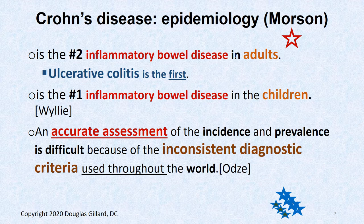Crohn's disease is the number two most common inflammatory bowel disease. In adults, you're more likely to get ulcerative colitis than Crohn's disease. In children, however, Crohn's disease is the number one inflammatory bowel disease — if a kid's going to get it, it's more likely to be Crohn's than ulcerative colitis.